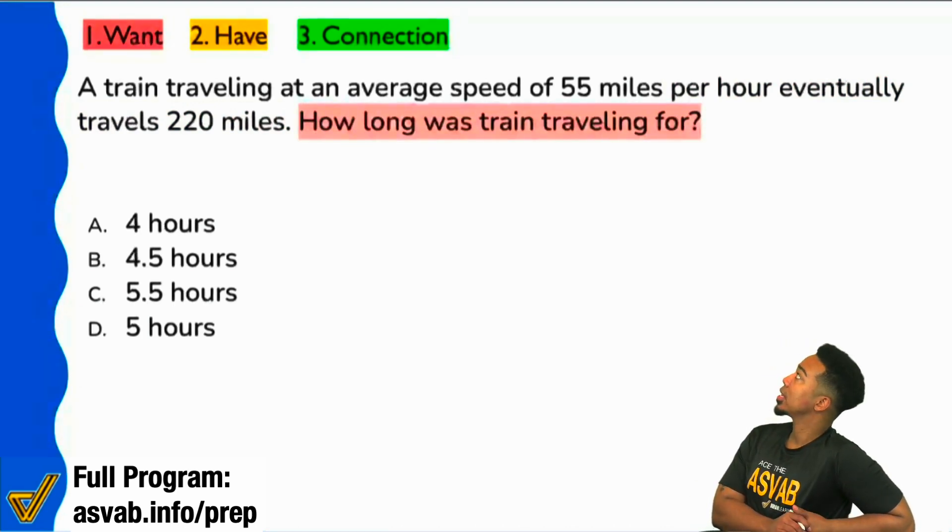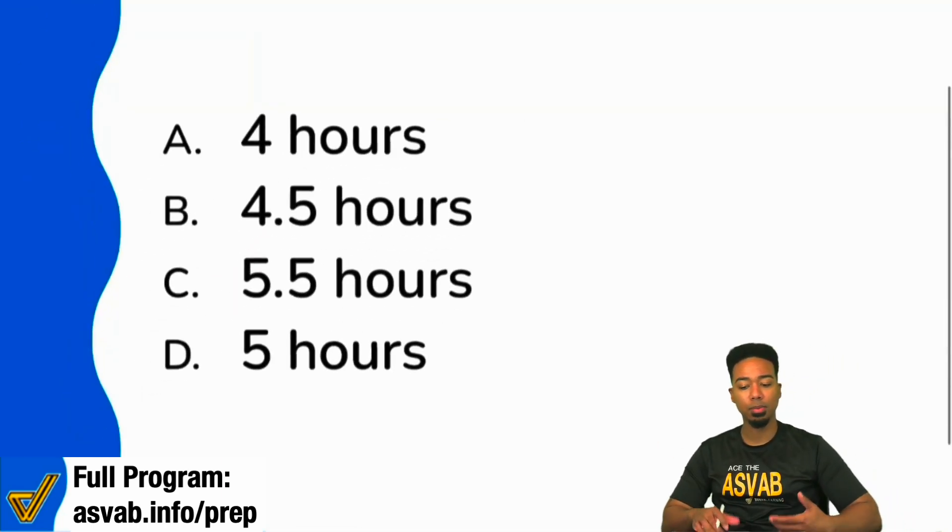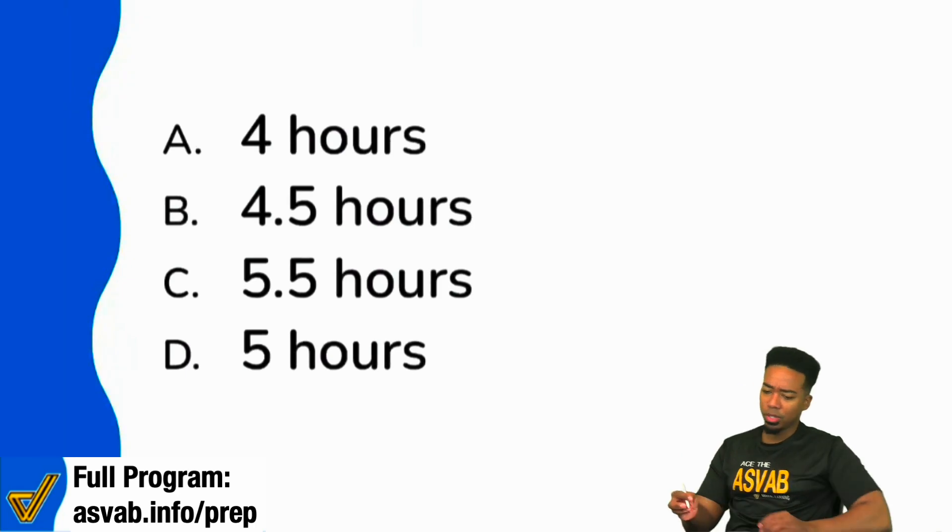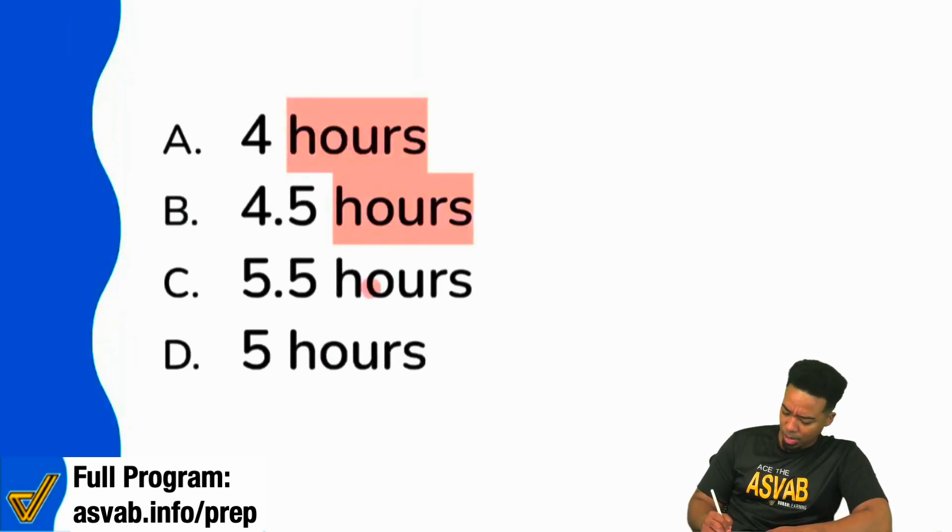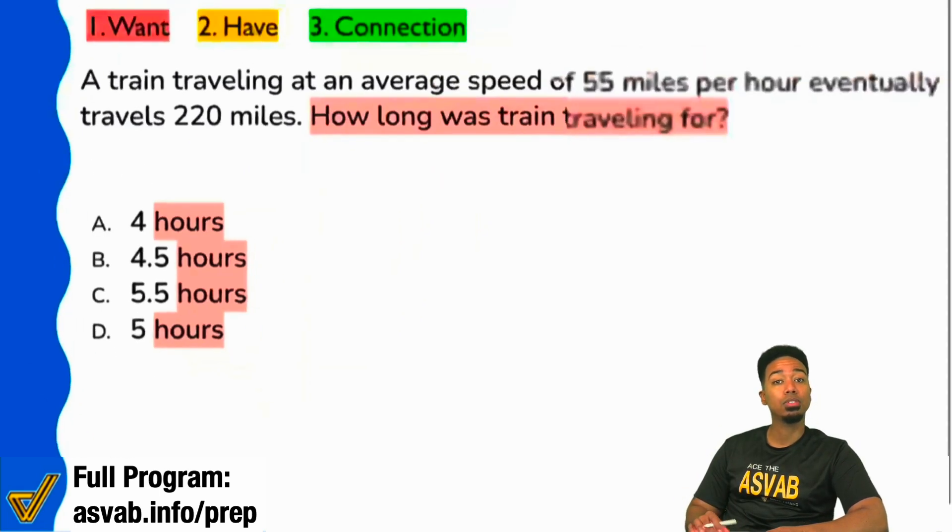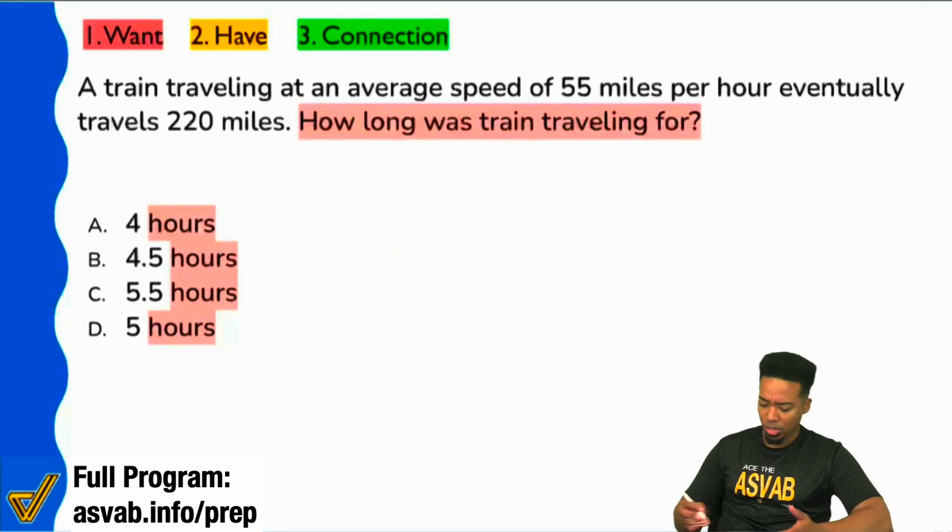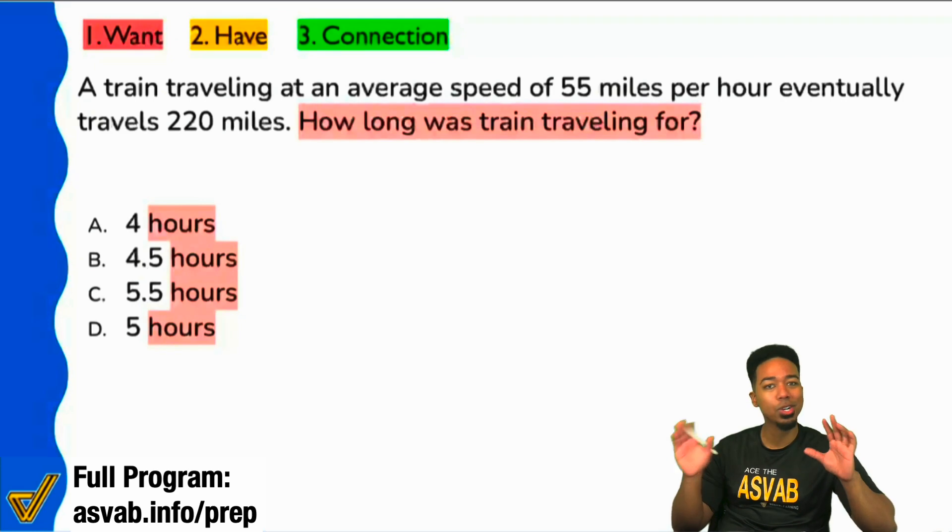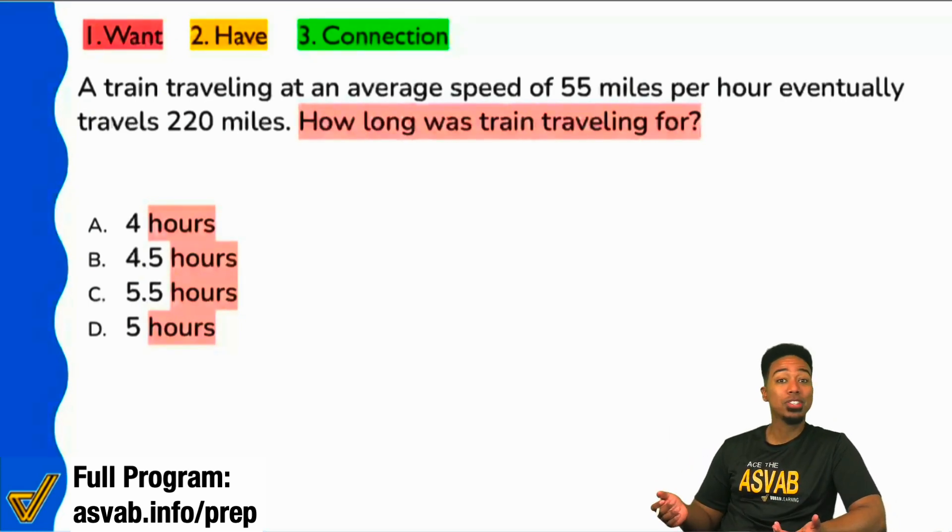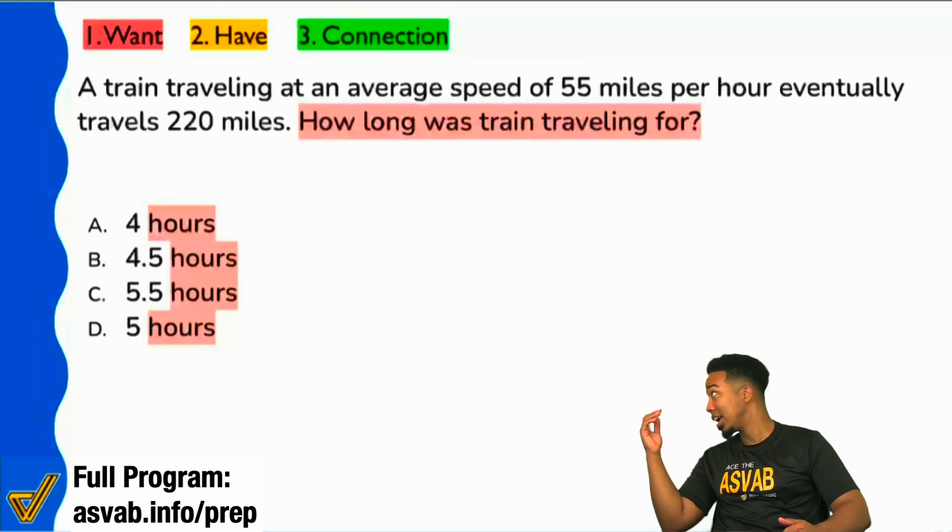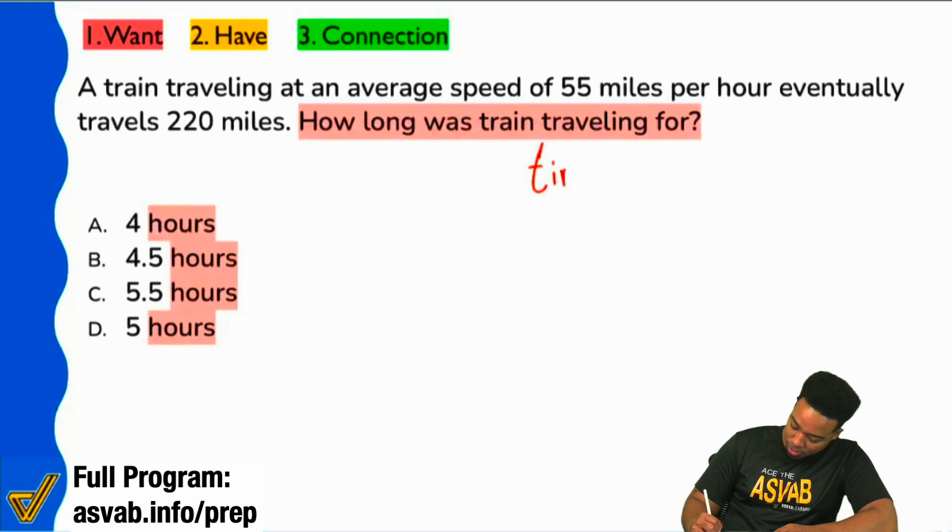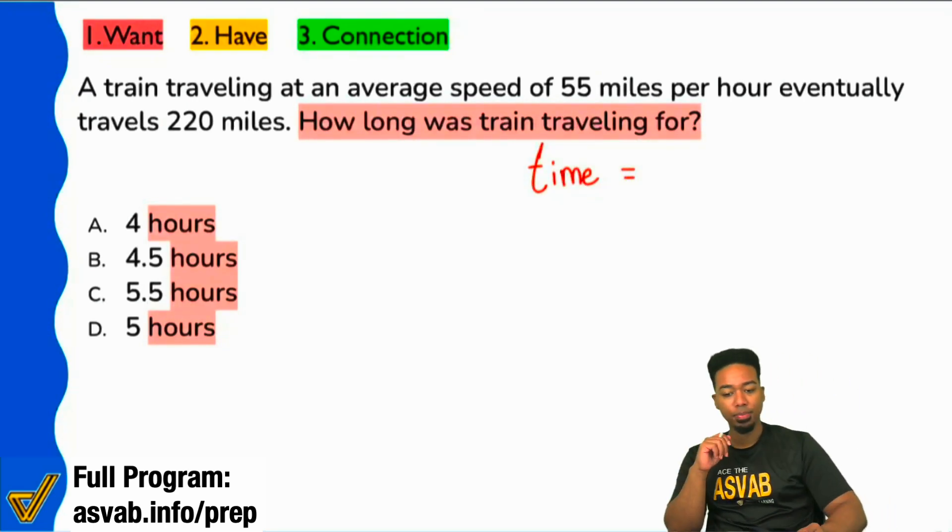If we take a look at that question and the answer choices that are right next to us, the answer choices, basically we're looking for what? What's the T word that we're looking for? That's right, we're looking for time. We see that it says hours as the unit for all of these answers, and we're looking for how long. Time equals what? That's what we want.